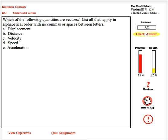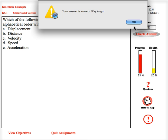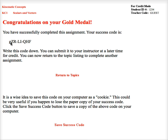It's A, C, and E. I get the answer correct. It gives me a success code. I write it down, and I give it to my teacher when the assignment's due. That's Minds on Physics.